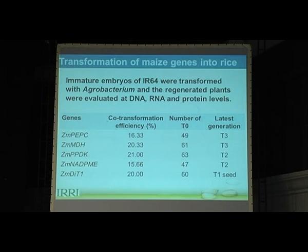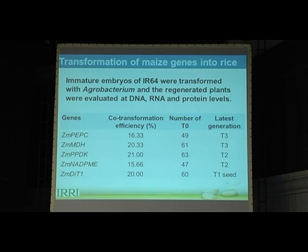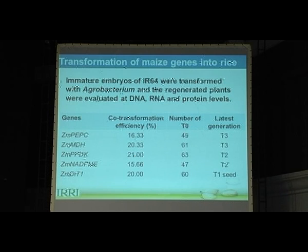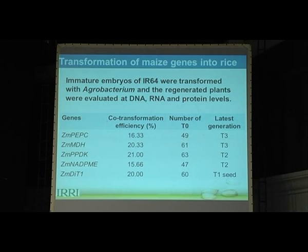This is a brief update on our transformation pipeline. We are using immature embryos of IR64 with Agrobacterium-mediated transformation. All plants regenerated undergo molecular evaluation at DNA, RNA, and protein levels. We are using a co-transformation strategy, introducing full-length genes from maize cloned into rice. The co-transformation efficiency is 15 to 20 percent, which is very good for the indica variety. We generate more than 100 plantlets per construct, and for some genes like PEPC, we are in T3 generation; for MDS, T3 as well.